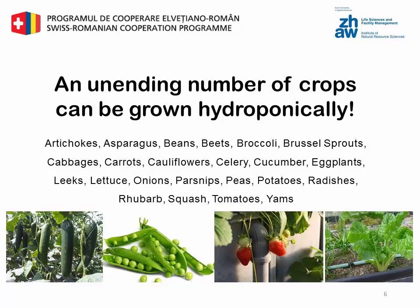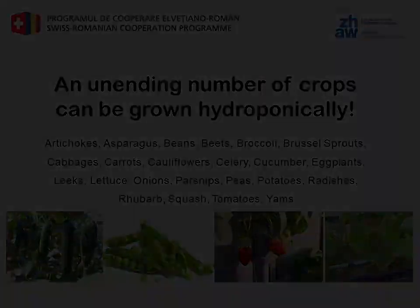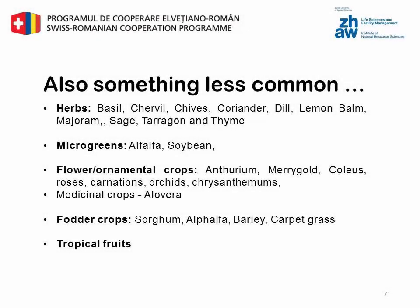Tomatoes are one of the most popular plants grown hydroponically and can ripen as much as eight weeks earlier and produce more fruits than when grown in soil outside in normal conditions. Hydroponic culture also allows you to grow fruits and melons all year round, no matter what the temperature is outside.